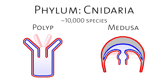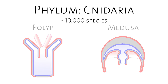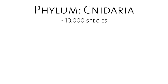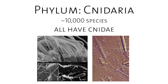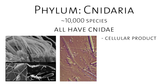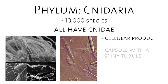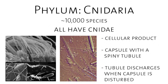The jellyfish, or medusae, moves around in the water column. They are all grouped together because they have cnidae. Cnidae are cellular products — basically a capsule with a tubule inside that is full of spines. When you disturb these animals, these capsules discharge and they sting you. If a jellyfish ever stings you, this is what actually harms you.